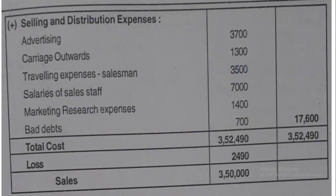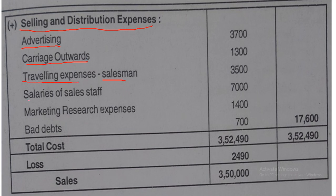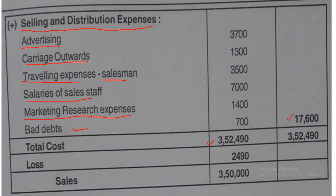Now we add selling and distribution overheads: advertising rupees three thousand seven hundred, carriage outward rupees one thousand three hundred, traveling expenses of salesman rupees three thousand five hundred, salaries of sales staff rupees seven thousand, marketing research expenses rupees one thousand four hundred, and bad debts rupees seven hundred. Total selling and distribution overheads are seventeen thousand six hundred. Adding this to cost of production gives total cost of rupees three lakh fifty-two thousand four hundred ninety. Our sales is rupees three lakh fifty thousand, so total cost is more than sales — therefore there is a loss of rupees two thousand four hundred ninety.